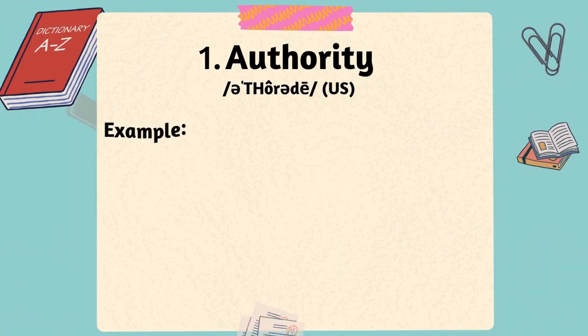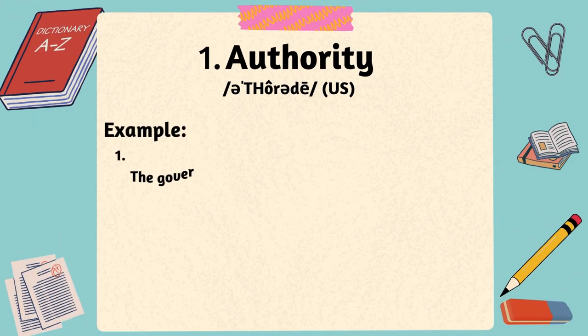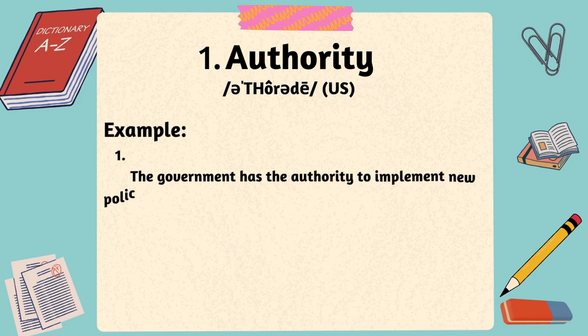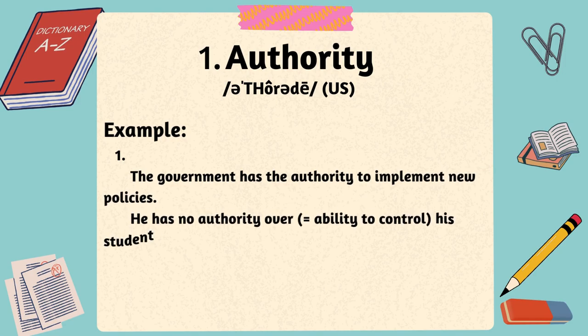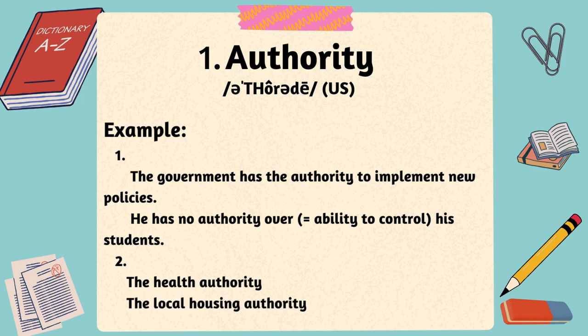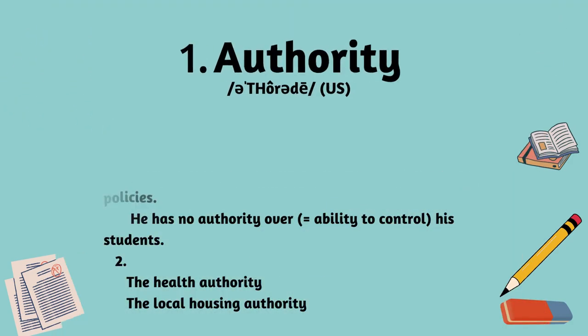Here are examples of authority in sentences. The government has the authority to implement new policies. He has no authority over his students. The health authority, the local housing authority.